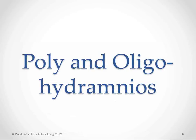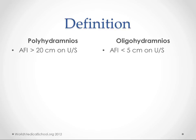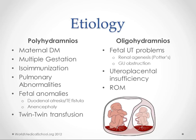Hey, this is Kendrick with worldmedicalschool.org. We're going to talk about polyhydramnios and oligohydramnios. 'Poly' means a lot, and 'hydramnios' refers to amniotic fluid — so a lot of fluid versus a little fluid. Polyhydramnios is defined by an amniotic fluid index above 20 centimeters on ultrasound, whereas oligohydramnios has an AFI under five centimeters.